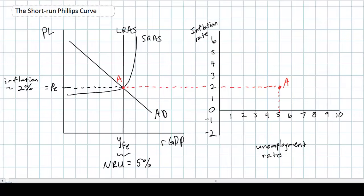Let's identify this graph on the right. Any graph that shows the relationship between inflation and unemployment is known as a Phillips curve, after the economist A.W. Phillips, who first observed this relationship in the United Kingdom in the 1800s. So our Phillips curve shows the relationship between inflation and unemployment.